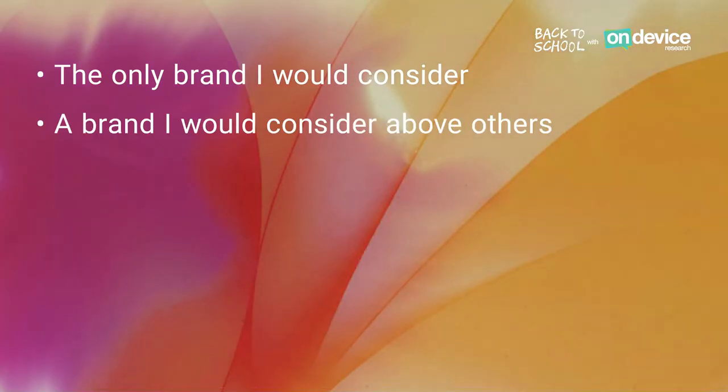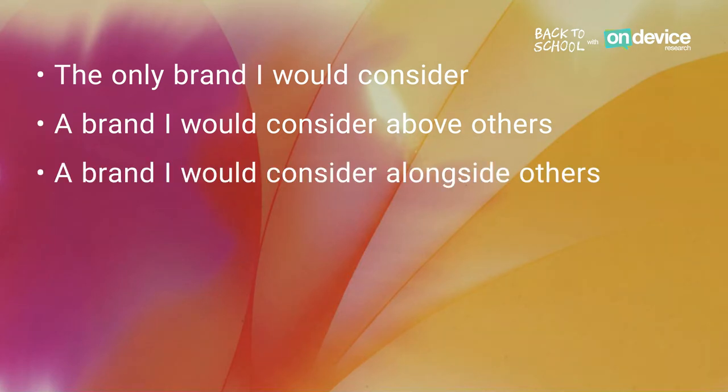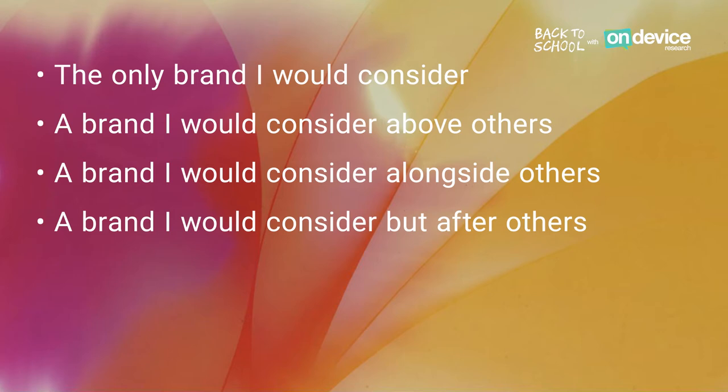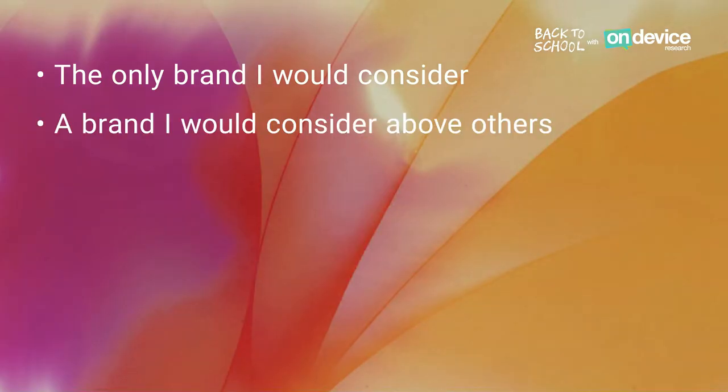We also measure consideration, which is typically split out by six different statements: the only brand I would consider; brand I would consider above other brands; brand I would consider alongside other brands; brands I would consider but only after other brands; unlikely to consider; and would never consider. We define consideration as a net of the top three box — the only brand I would consider, brand I would consider above others, and brand I would consider alongside others. We can also measure preference, which is the top two box. We can measure consideration or preference in terms of top two competitors, to see how the brand sits within the competitive landscape.